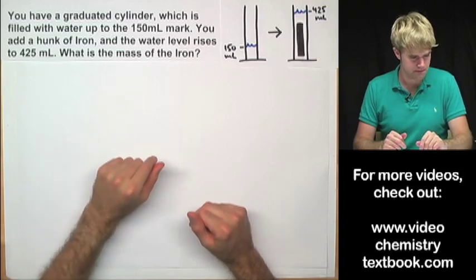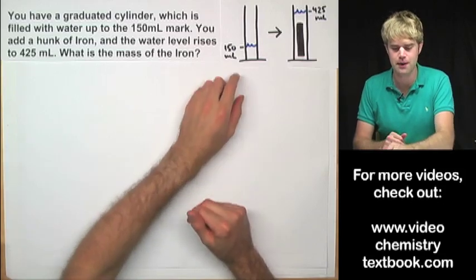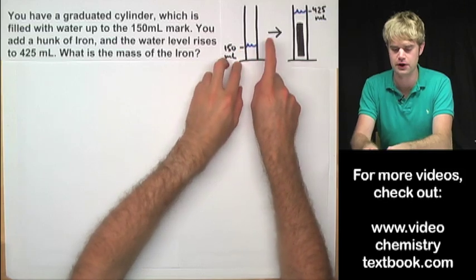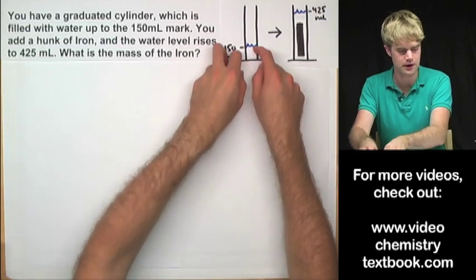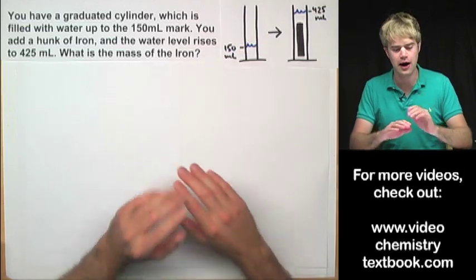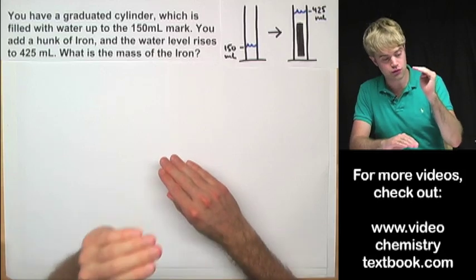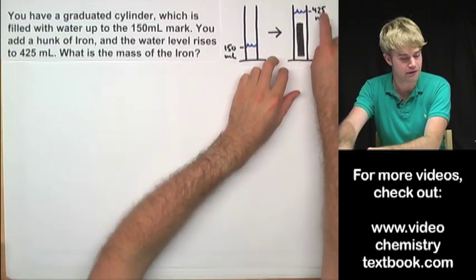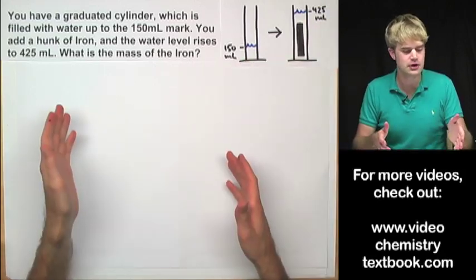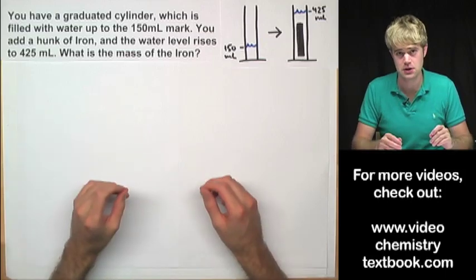You have a graduated cylinder which is filled with water up to the 150 milliliter mark. So there it is right there. Then you add a hunk of iron and the water level rises to 425 milliliters. And the question asks what is the mass of the iron?